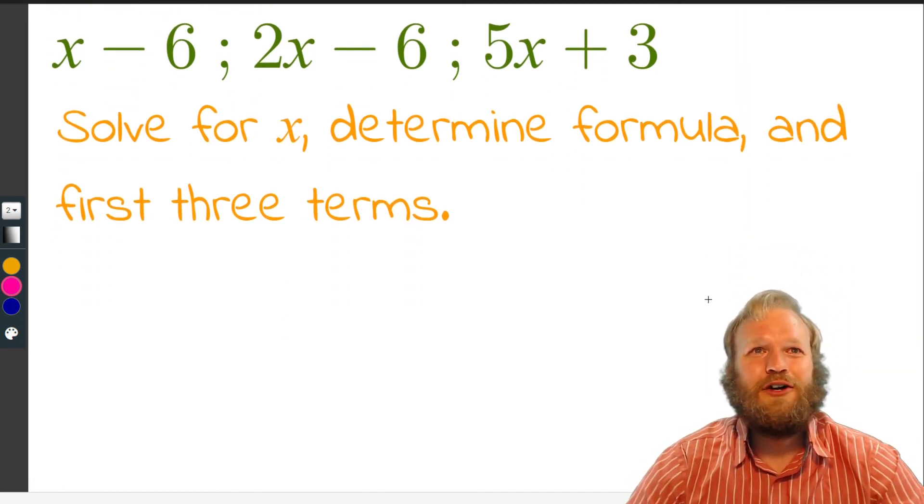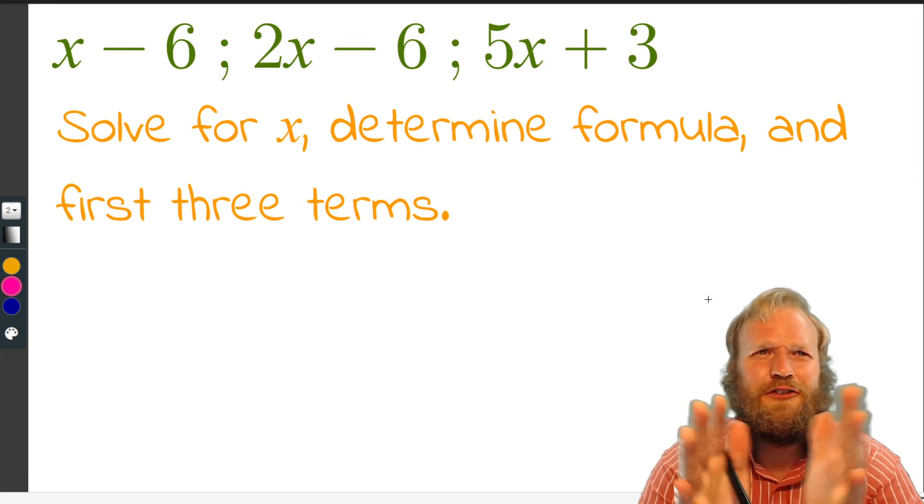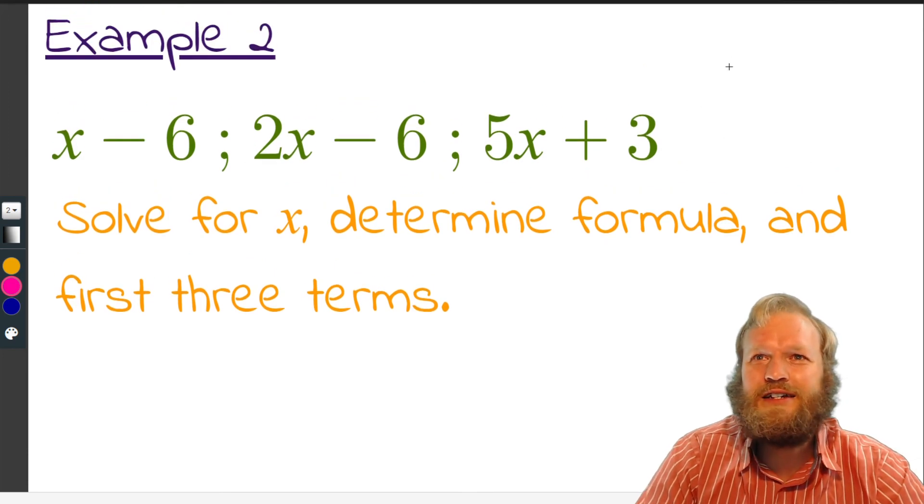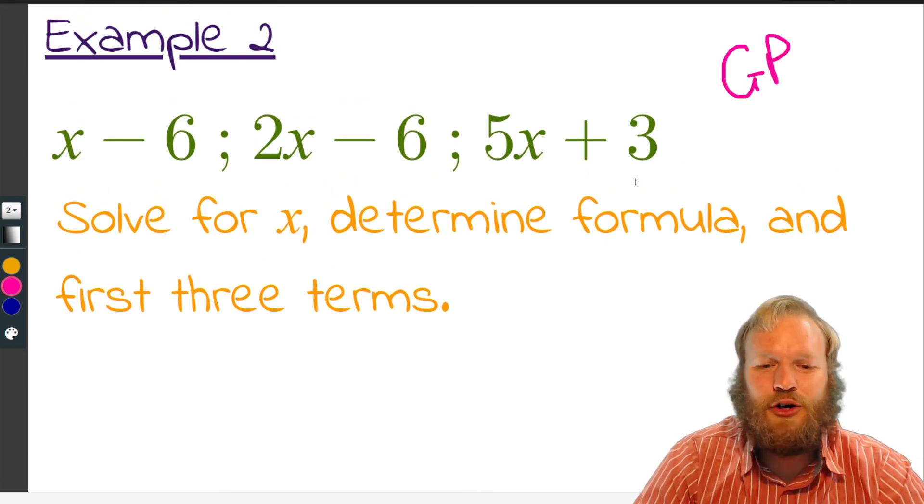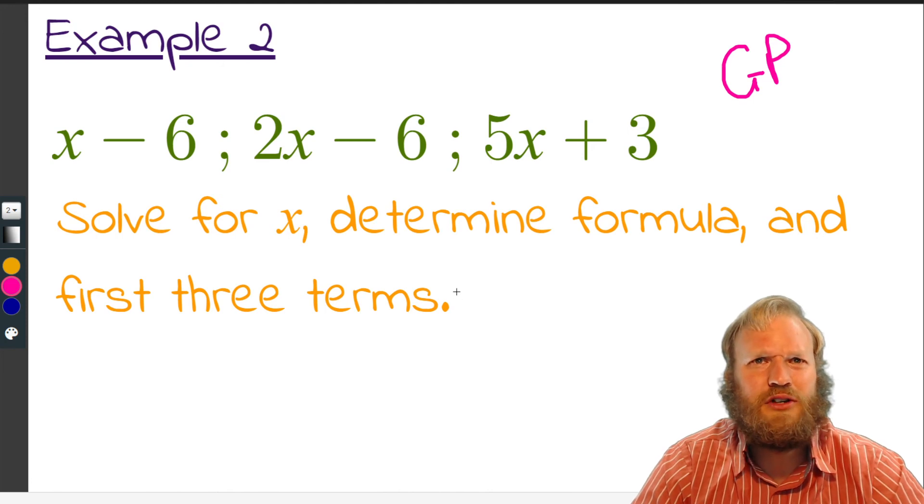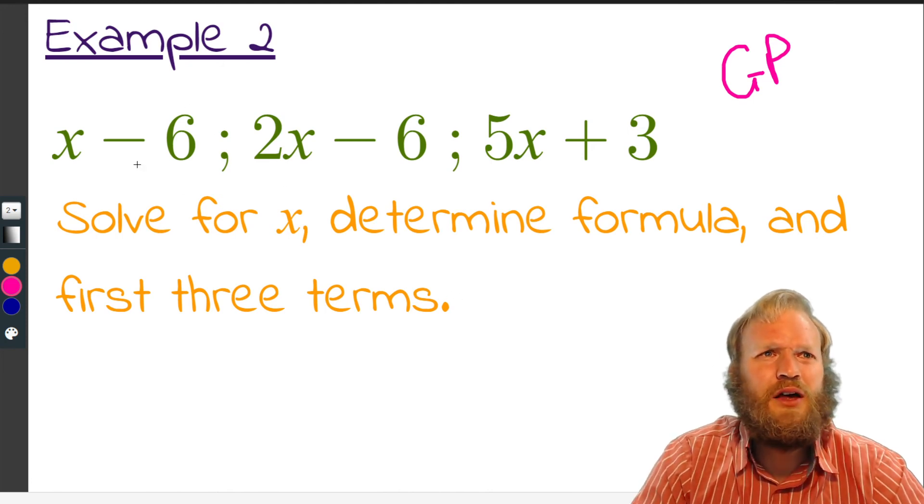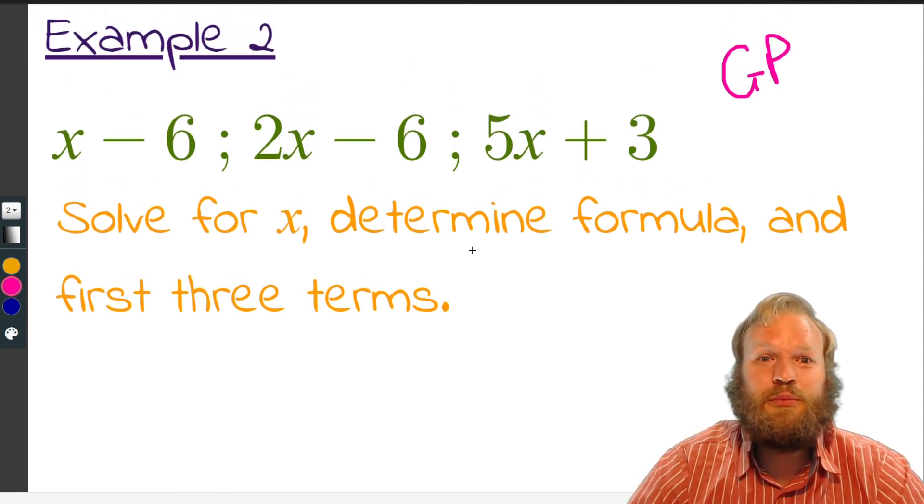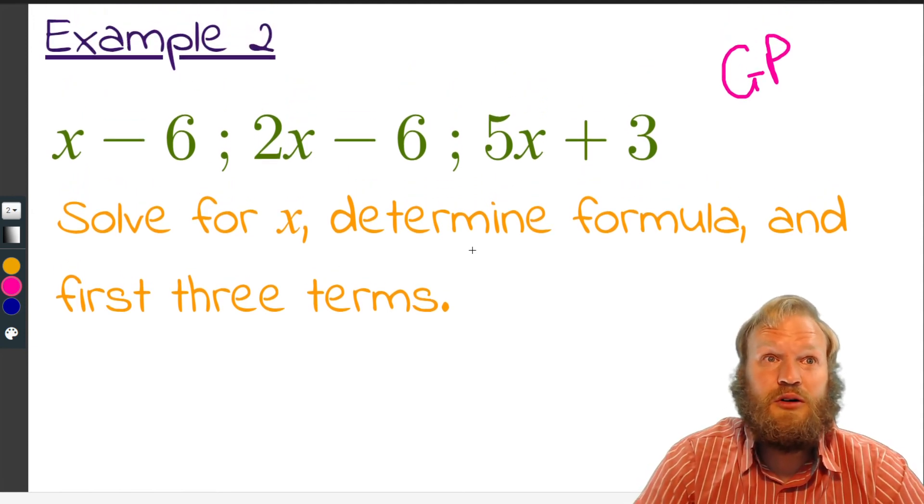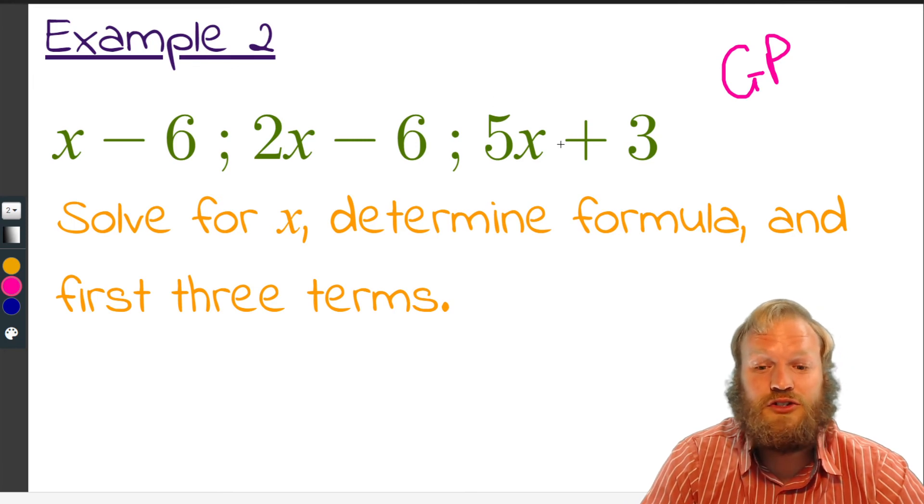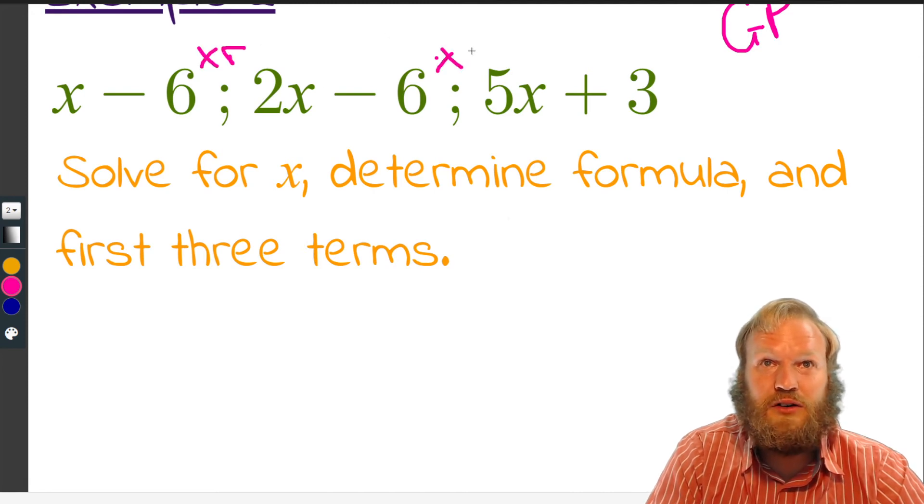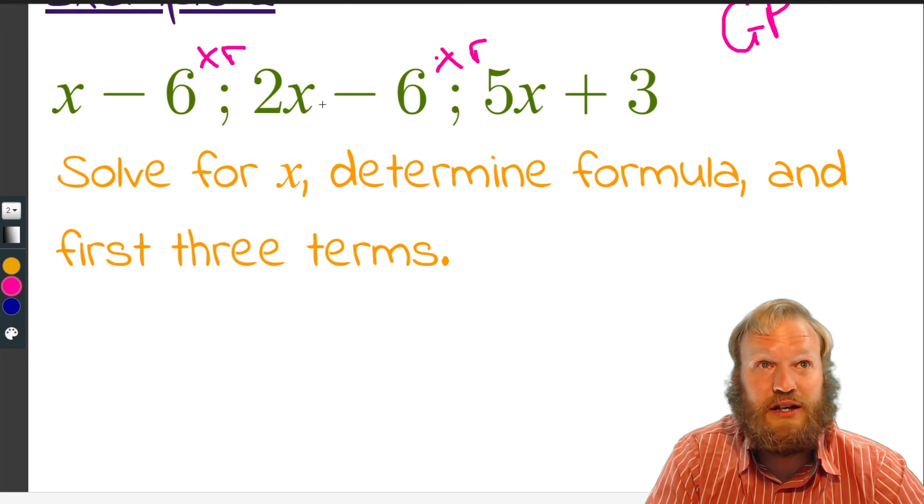Example two, we're given three terms in our sequence, the first three. And we are told, which I didn't say here, is that it is a geometric progression, geometric series, or geometric sequence in this case. So x minus 6 to 2x minus 6. What do we know about geometric progressions? Well, we know that they go up by a constant ratio. So we know that times something gives us this. So we're going to times by the same thing to get from one term to the next.